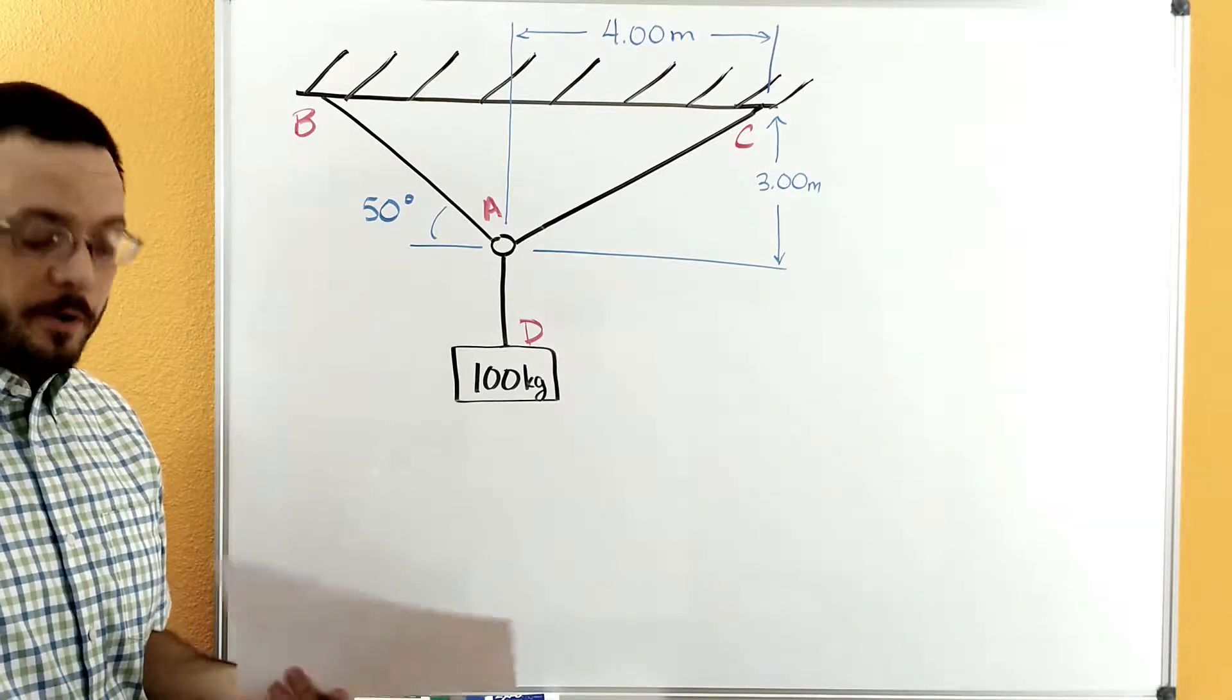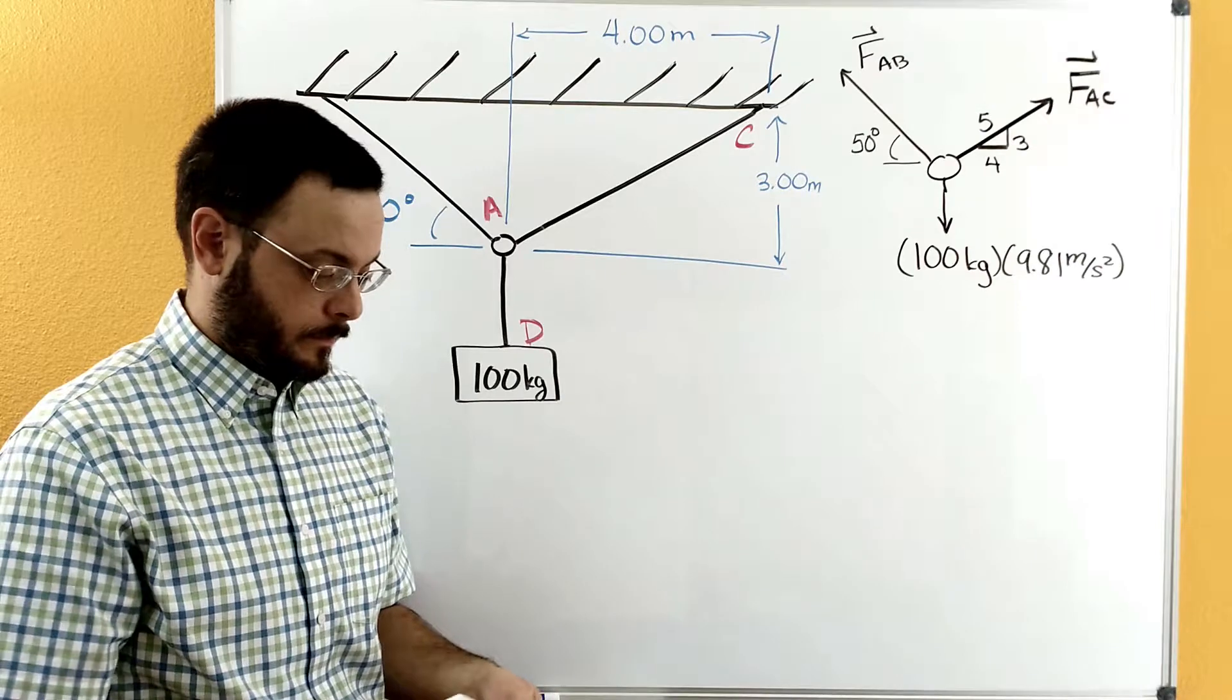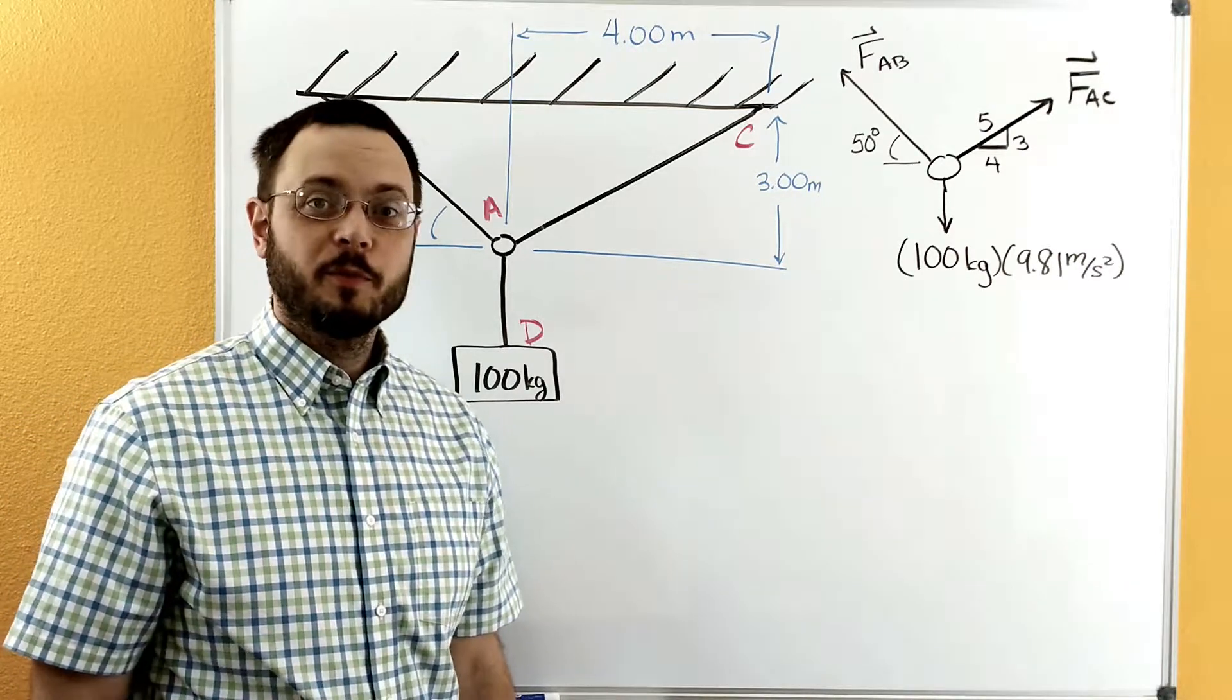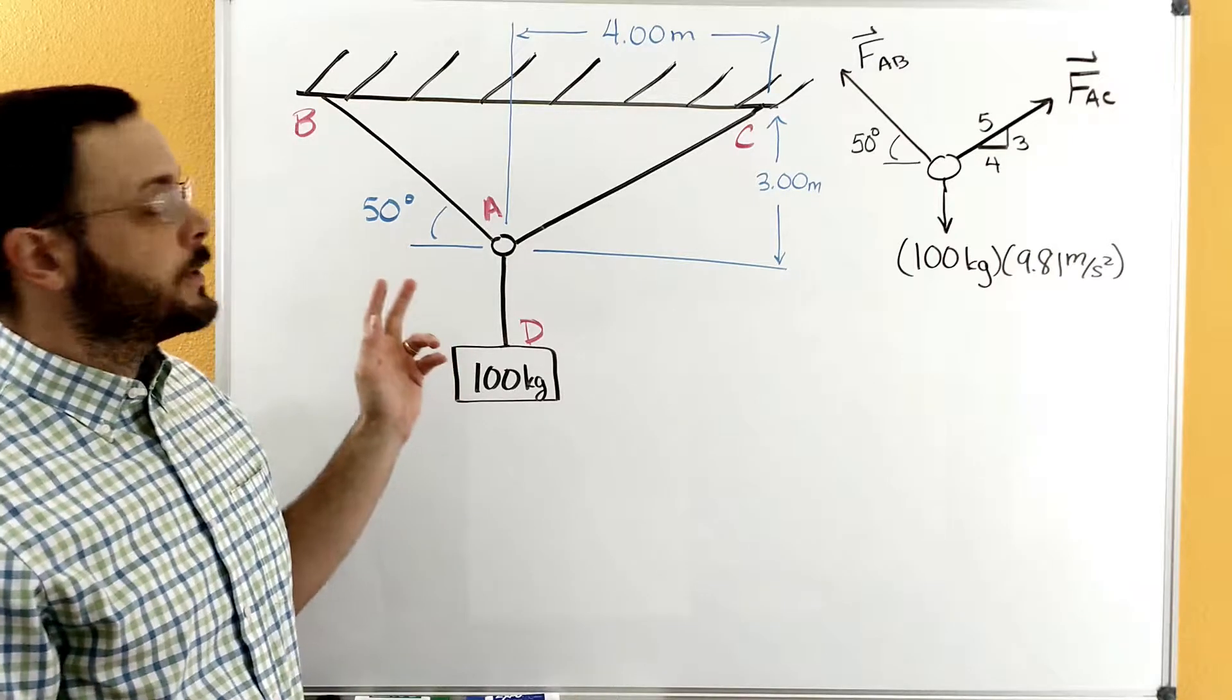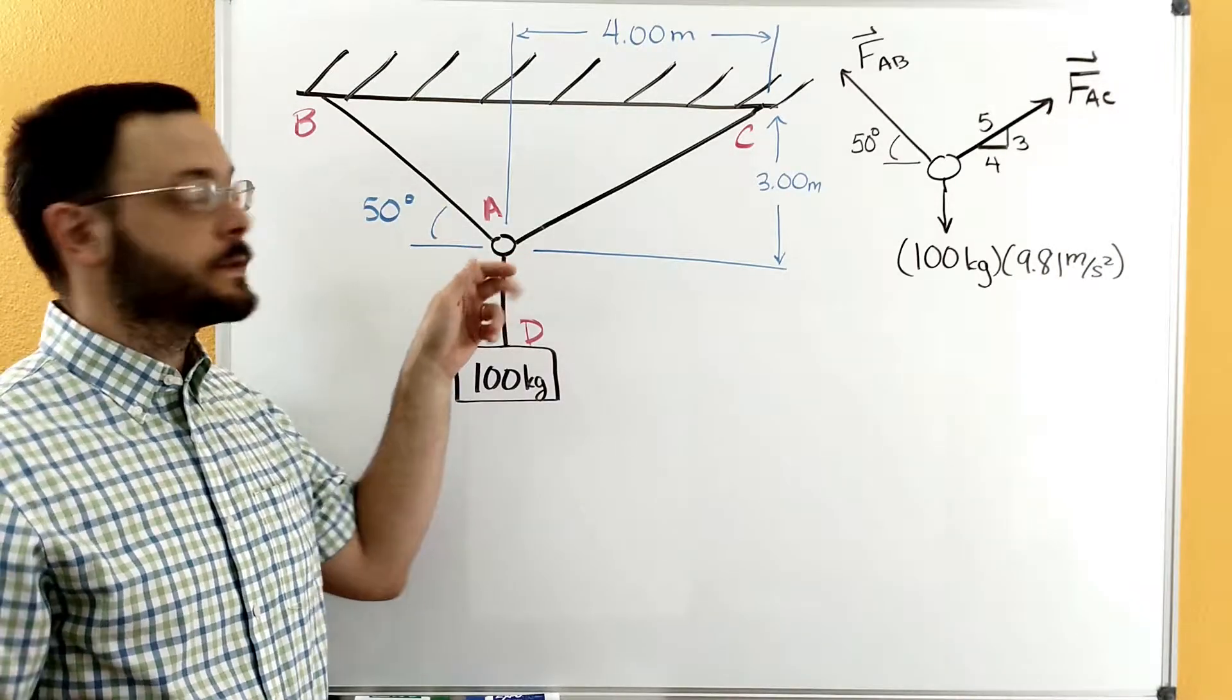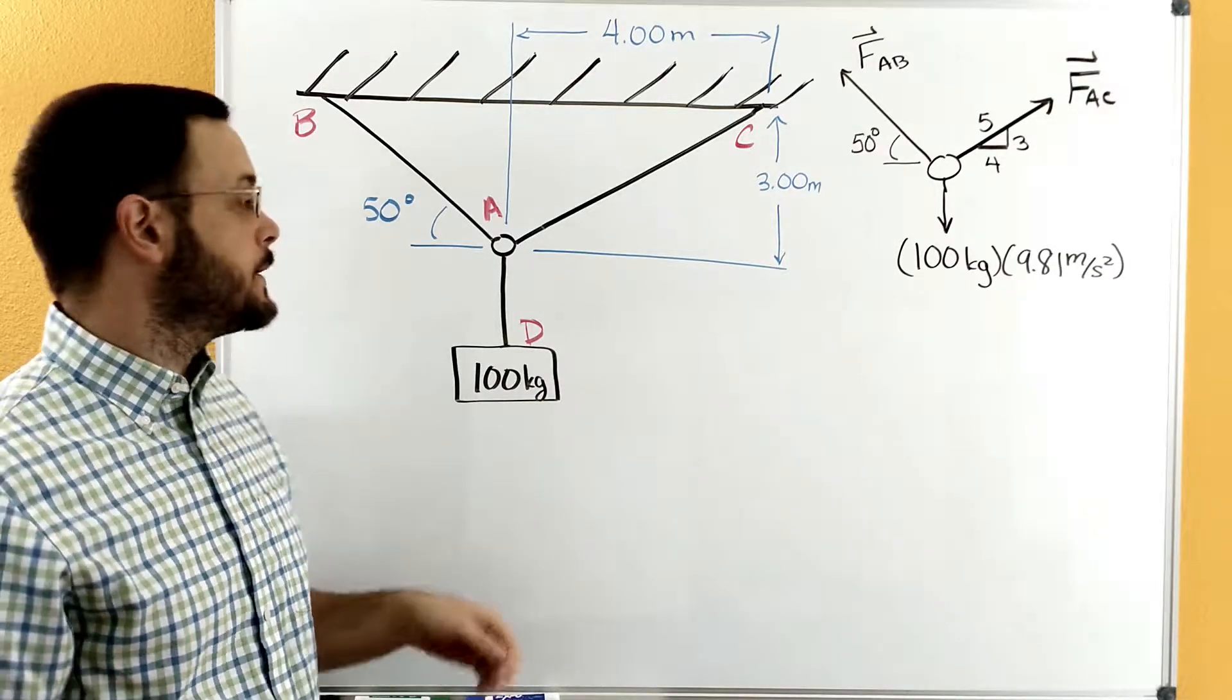So let's start off with drawing a free body diagram, and then I'll show you how to solve it. With our free body diagram, let's imagine that we have a pair of scissors. We're going to cut through all the cables that are supporting A. A is going to be our particle. It's one point in space.